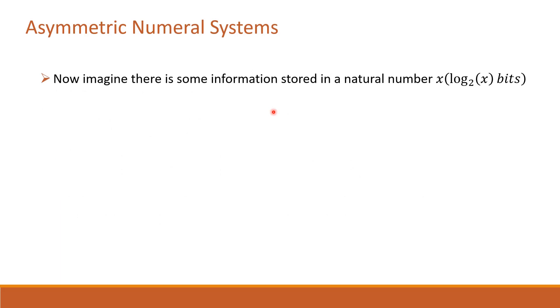Consider the binary alphabet case. Imagine there is some information stored in a natural number x. Here, a natural number x contains log(x) bits of information. As we discussed, a symbol s of probability p carries log(1/p) bits of information.